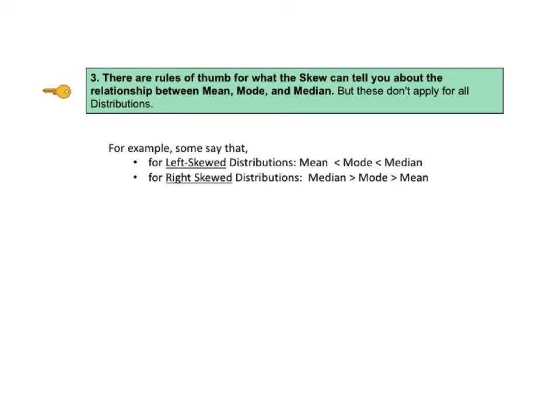KTU number 3. There are rules of thumb for what the skew can tell you about the relationship between the mean, the mode, and the median. But these don't apply for all distributions. For example, some books say that for left skewed distributions, the mean is less than the mode, which is in turn less than the median. And for right skewed distributions, it's the opposite. The median is greater than the mode, which in turn is greater than the mean.